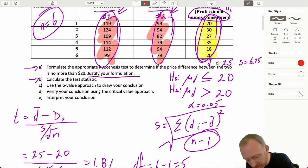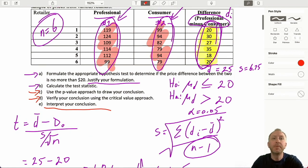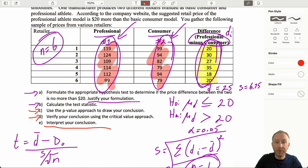Here we've gone through both of our approaches. They both give us consistent results. Neither of them allow us to reject. Both of these, as we expect, give us the same conclusion. We have insufficient evidence to reject the null hypothesis, which means we are unable to show that the average difference in price between the professional model and the consumer model is greater than $20. Our evidence supports the claim that the difference in the price between the professional and the consumer models is no more than $20.